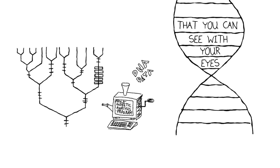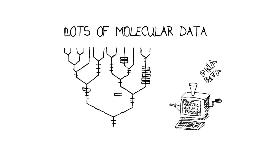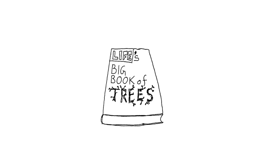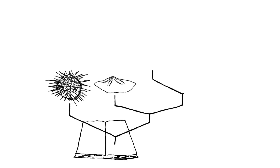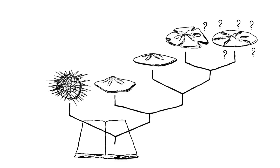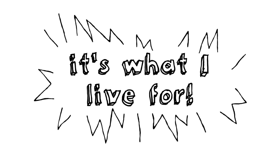Phylogeneticists rely more and more on the analysis of large amounts of molecular data to develop trees. With the grand view of these trees in hand, you get an even more powerful way of looking at how evolution happens. You can actually read life's history book, which is one of the most exciting things you can possibly do in this field. For example, in the case of the sand dollars, I can explore why they got flat or why they have these bizarre holes in them. Using the tree to tell a story of evolution is what I live for in my science.